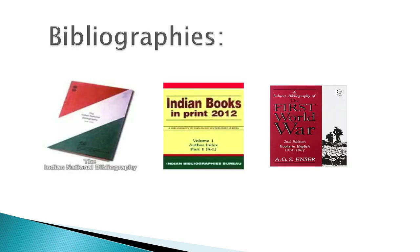A bibliography is a systematic list of documents that share a common factor, which may be subject, language, period, author or some other criterion. The list is arranged in some order. Such a bibliography, known as enumerative or systematic bibliography, attempts to record or list documents. Each entry provides bibliographical details. For a book, an entry may contain the name of the author, title of the book, publisher and date of publication. For a journal, an entry may contain the name of the author, article title, journal title, volume number, issue number, year of publication, and page numbers.